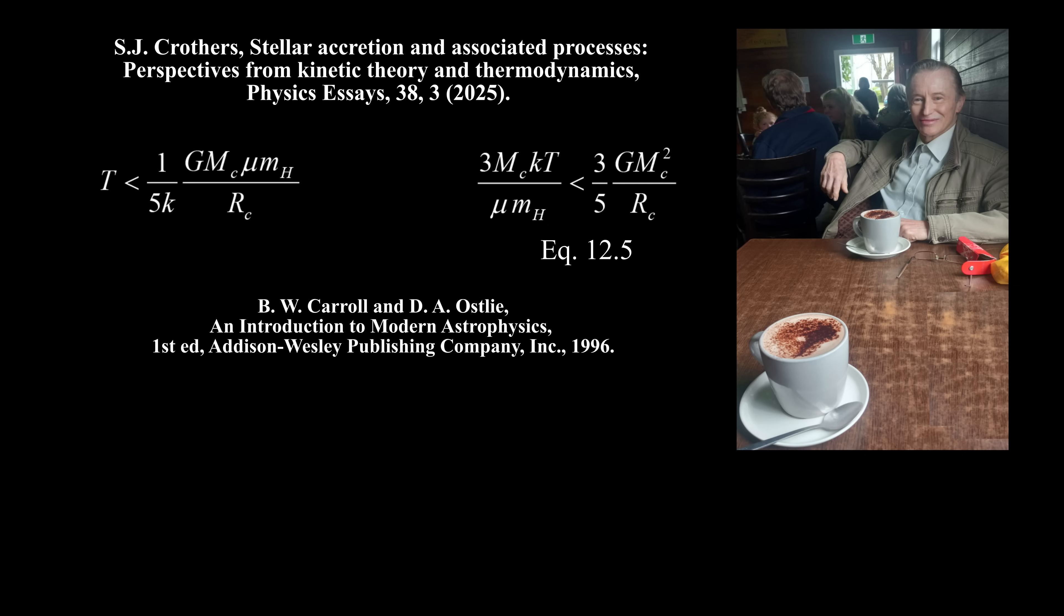Nevertheless, they calculate from their false inequality the critical mass of a gas cloud to compress itself, called the Jeans mass, at their equation 12.7. Mass on the left side is extensive, but the right side is intensive, making this equation thermodynamically unbalanced, so it is invalid. The Jeans mass does not exist.